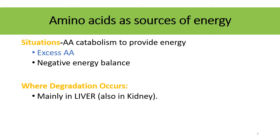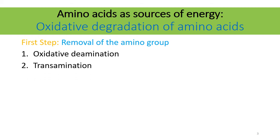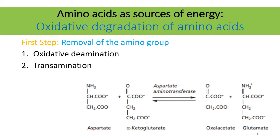Muscle tissue is relatively inactive for amino acid degradation. Now, the oxidative degradation of amino acids: the first step is removal of the amino group. There are basically two main pathways involved — oxidative deamination and transamination. In transamination, the amino group is transferred to the carbon skeleton of a keto acid, usually alpha-ketoglutarate.